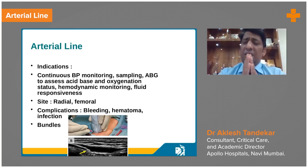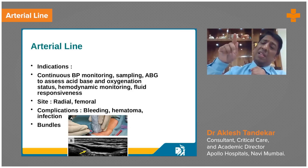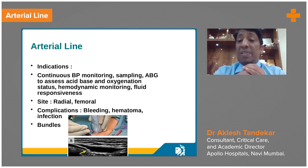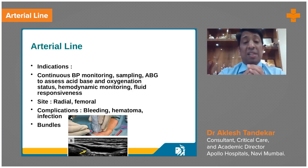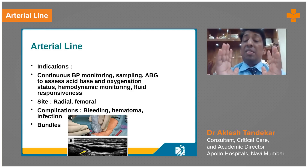Hemodynamic monitoring is also possible with the arterial line. Swings in the arterial line waveforms — if the swings are too frequent — that means the patient is hypovolemic and likely to respond to fluid resuscitation. So the use of arterial line is not only for BP monitoring and sampling, but also to assess the patient's fluid responsiveness.